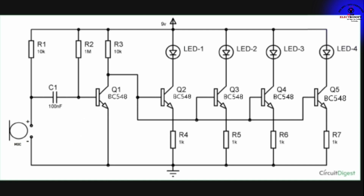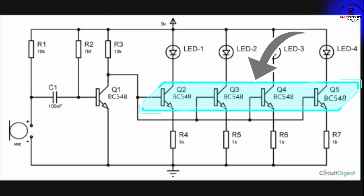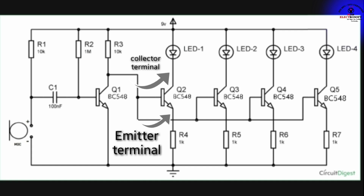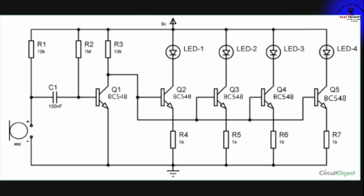The voltage levels and music signals are applied to the remaining transistors, which amplify the signal. The LEDs glow according to the sound pattern — the transistor collectors connect to LEDs and emitter terminals have resistors. Finally, this project is demonstrated practically.